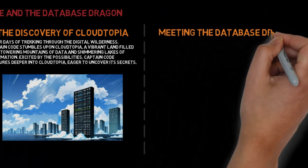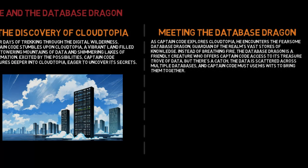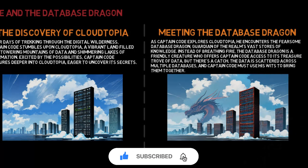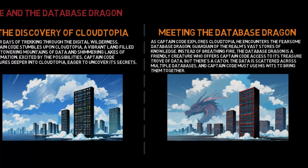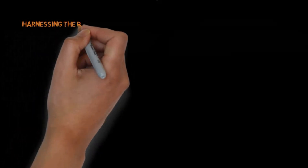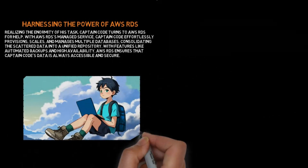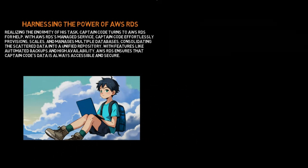Meeting the Database Dragon: As Captain Code explores Cloudtopia, he encounters the fearsome Database Dragon, guardian of the realm's vast stores of knowledge. Instead of breathing fire, the Database Dragon is a friendly creature who offers Captain Code access to its treasure trove of data. But there's a catch — the data is scattered across multiple databases, and Captain Code must use his wits to bring them together. Realizing the enormity of his task, Captain Code turns to AWS RDS for help. With AWS RDS's managed service, Captain Code effortlessly provisions, scales, and manages multiple databases, consolidating the scattered data into a unified repository. With features like automated backups and high availability, AWS RDS ensures that Captain Code's data is always accessible and secure.